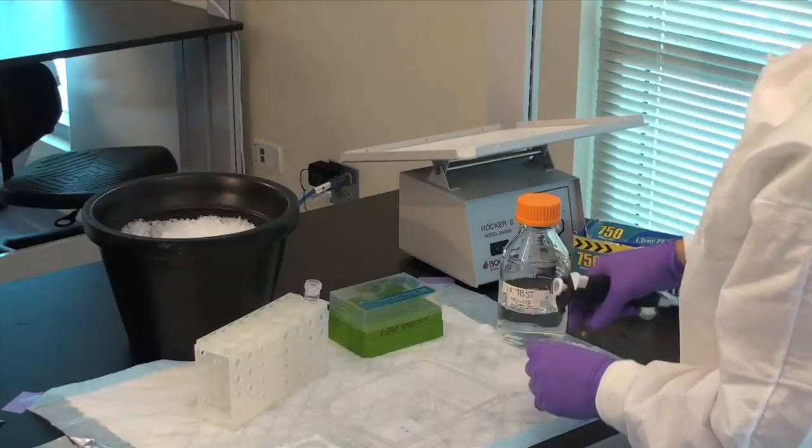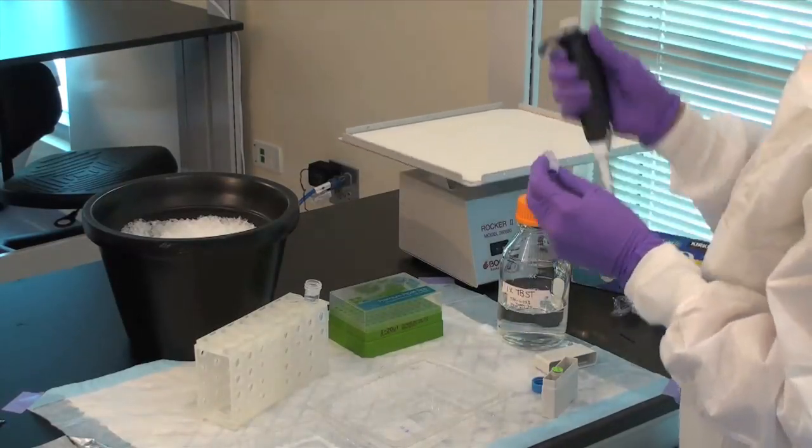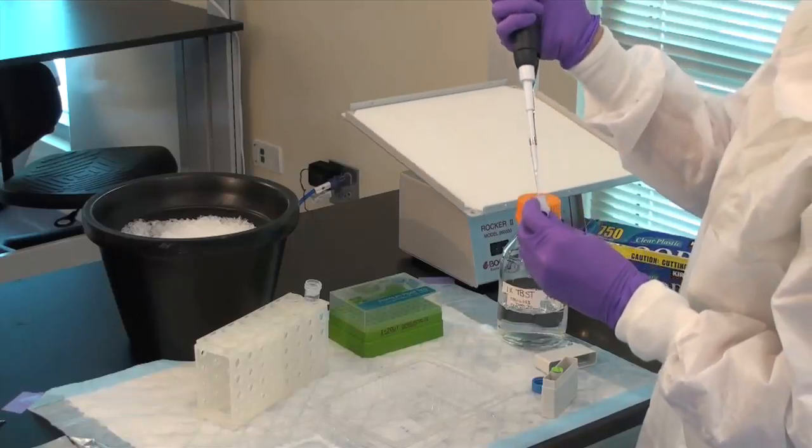Wash the membrane three times with TBST, then add the secondary antibody made up in TBST and place it on the shaker for an additional one to two hours.